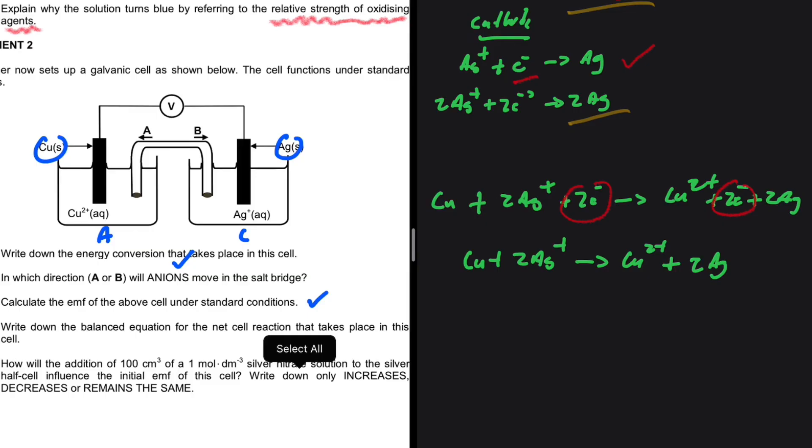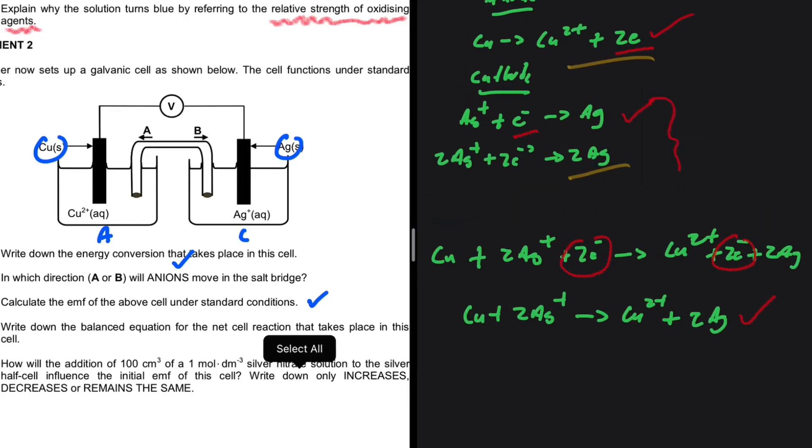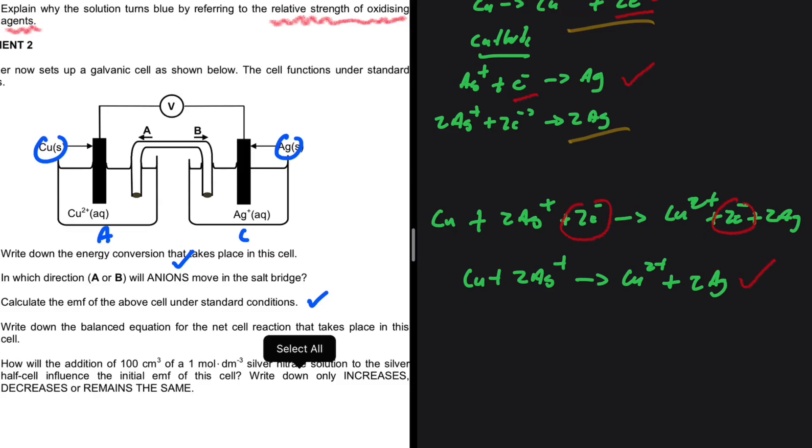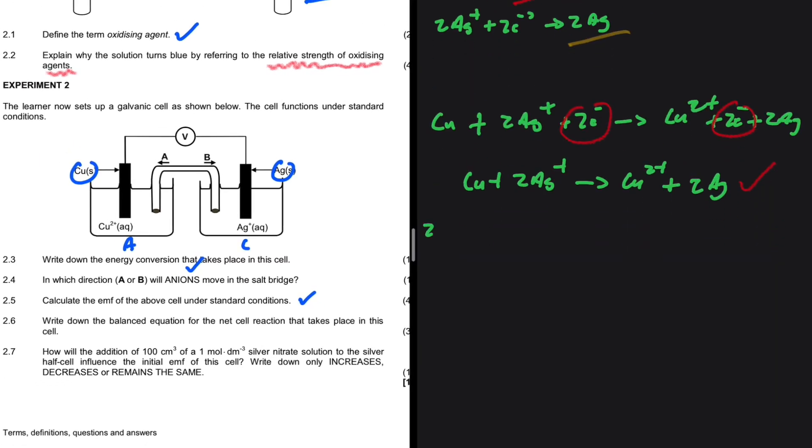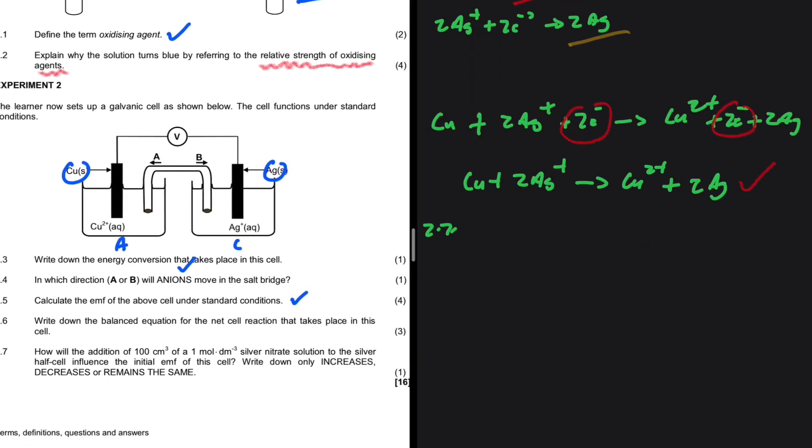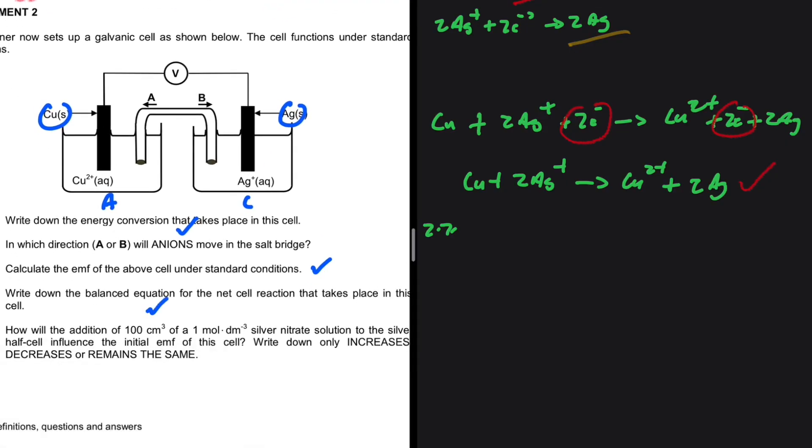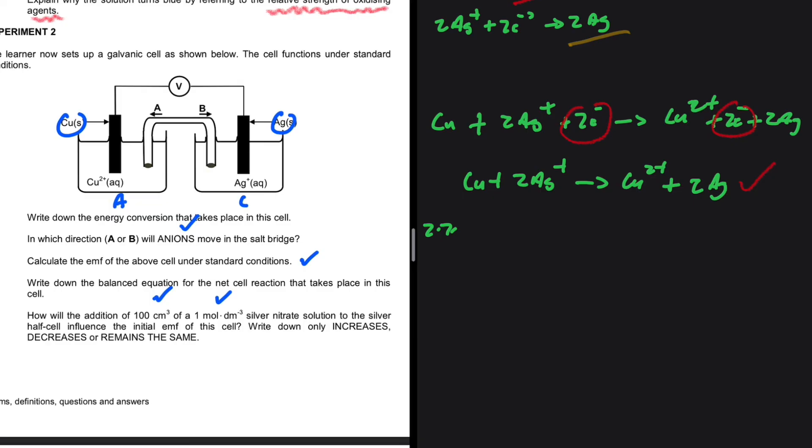In an exam situation, this is what is needed. All of this is just me showing you how it comes about. 2.7: How will the addition of 100 cm³ of 1 mol/dm³ silver nitrate solution to the silver half-cell influence the initial EMF of the cell? In standard conditions, we need the concentration to be 1 mol/dm³. This change is not changing our standard conditions because the concentration is still 1 mol/dm³, so the initial EMF will remain unchanged. The answer is remains the same.